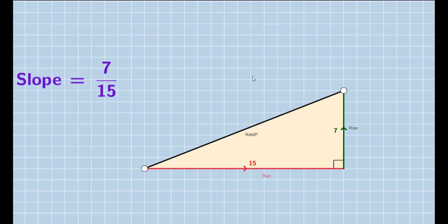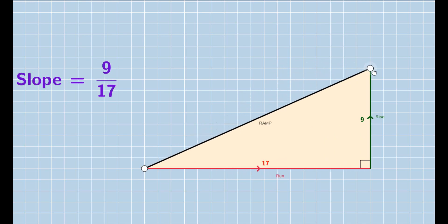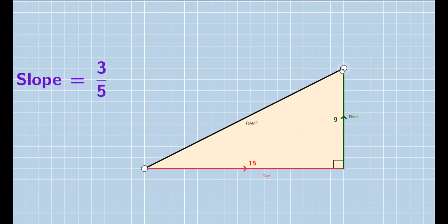We will call projection along axis of x run, and projection along axis of y rise, and we'll call this segment ramp. Now let's see how the values of slope change for different lines. See here the slope is increasing and now it's decreasing because I have kept the run constant and keep on changing the rise.